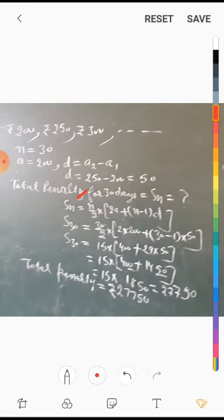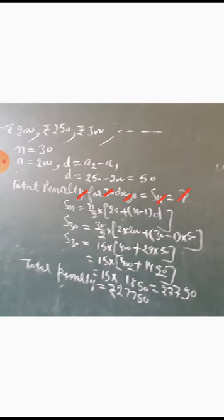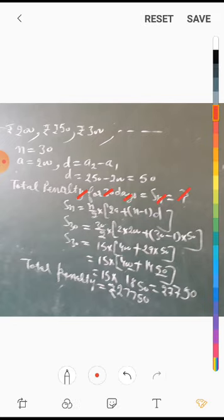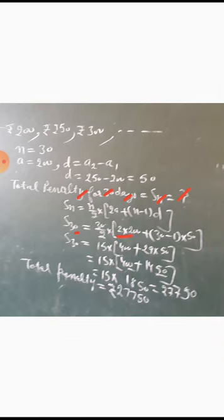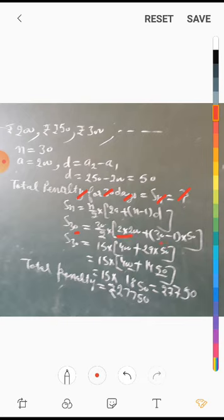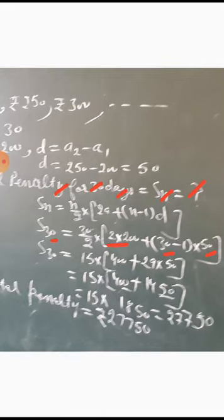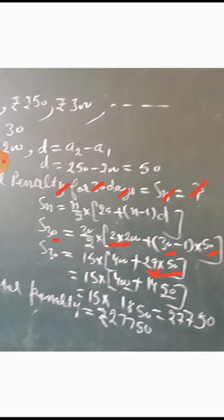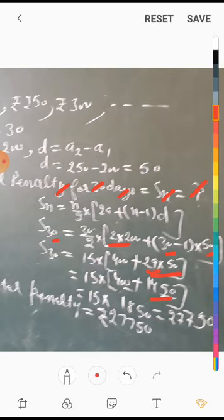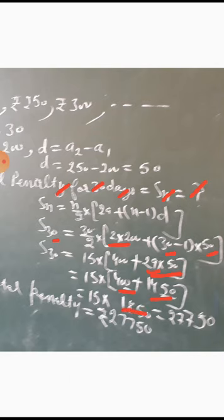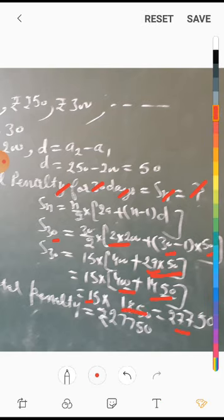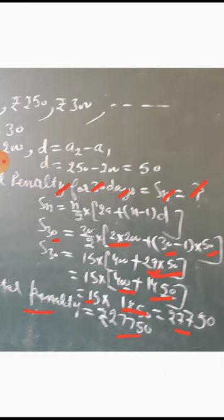Using S_n = n/2 × [2a + (n-1)d], with n = 30: S_30 = 30/2 × [2×200 + (30-1)×50] = 15 × [400 + 29×50] = 15 × [400 + 1450] = 15 × 1850 = 27,750. So the total penalty is Rs. 27,750.